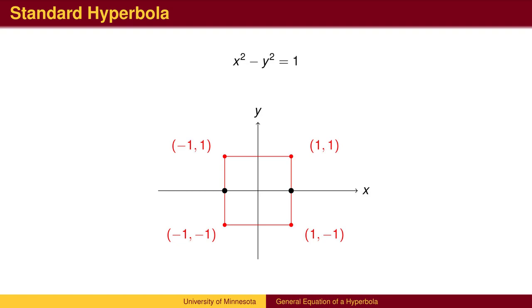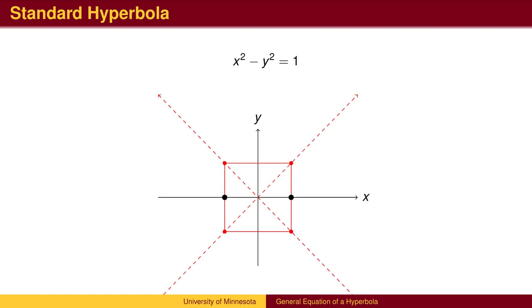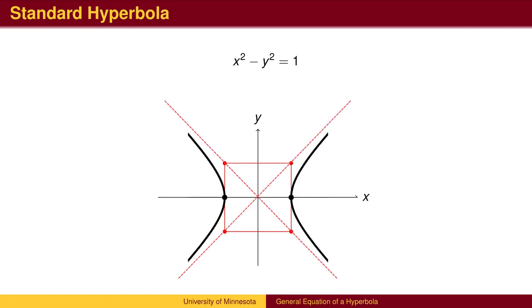To draw the graph, we need to draw these lines that the graph approaches, called asymptotes. For the standard hyperbola, we draw a box whose corners are up and down 1 and left and right 1. We then draw the asymptotes diagonally through the box, and sketch the graph from the vertices toward the asymptotes.